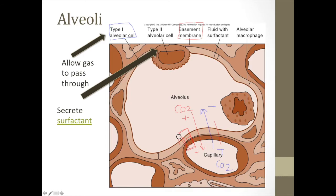CO2 diffuses really easily over these membranes, and so does oxygen, because of the very small size of these respiratory membranes. When this membrane thickens — say somebody worked in a coal mine, has silicosis, or is a painter — the alveolar wall starts to scar. In fibrotic lung conditions, it's not that the entire lung becomes fibrotic and stiff, but rather these respiratory membranes become scarred and gas exchange is impaired.